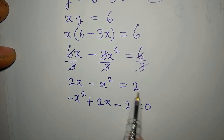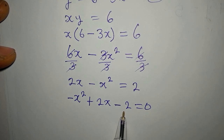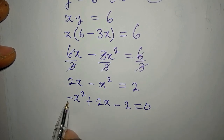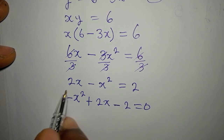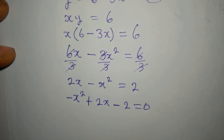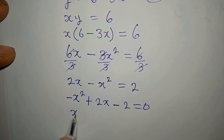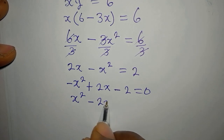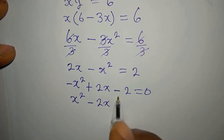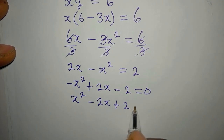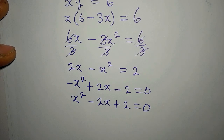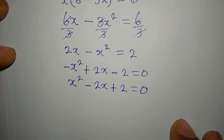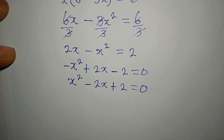I brought the constant to the left, so it became negative. Now multiply all through by negative 1 so that the coefficient of x squared will be positive. This gives us x squared minus 2x plus 2 equals 0.